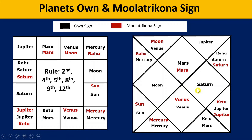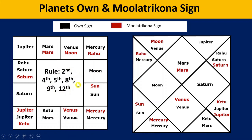Saturn's Mulatrikona sign is Aquarius. From here, we calculate the Moon sign position. Counting from Saturn's Mulatrikona: 1st, 2nd, 3rd, 4th, 5th, 6th — Moon's position is 6th from Saturn's Mulatrikona sign. Is the 6th mentioned in the friendly positions? No. So Moon is enemy of Saturn.